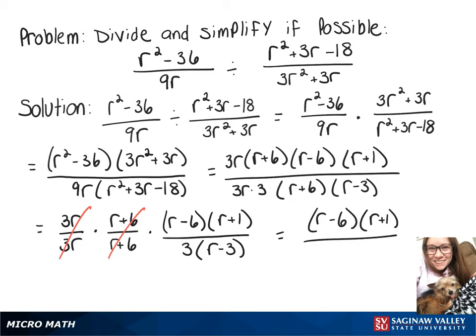And then if we distribute the 3 on bottom that leaves 3r minus 9. So that's one way to write the answer, or if you wanted to multiply out the top you would get r squared minus 5r minus 6 over 3r minus 9.